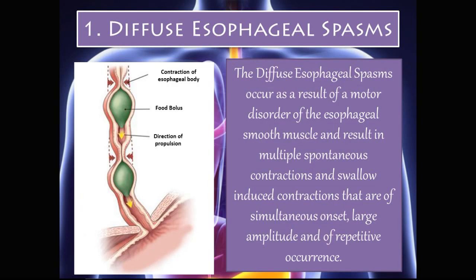Diffuse esophageal spasms occur as a result of a motor disorder of the esophageal smooth muscle, resulting in multiple spontaneous contractions and swallow-induced contractions that are of simultaneous onset, large amplitude, and repetitive occurrence. These contractions are not just occurring when the patient swallows food — they are multiple, spontaneous, very strong, and repetitive.